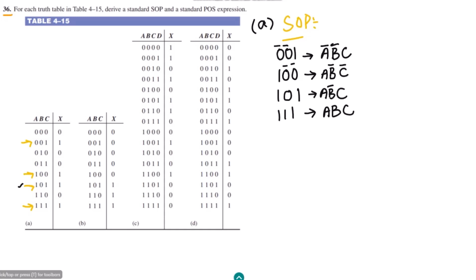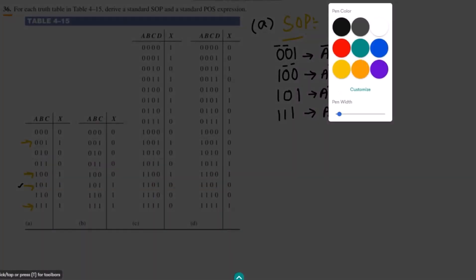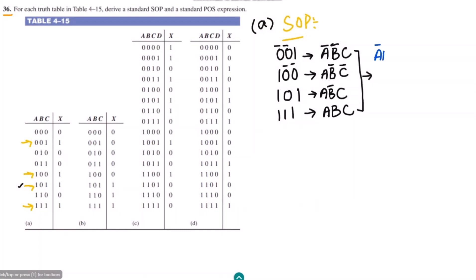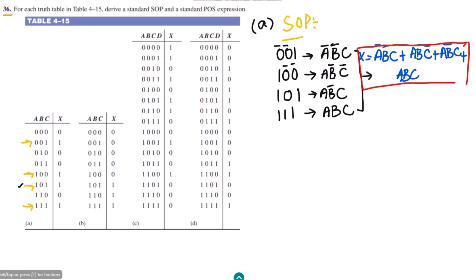In order to get the sum of product form, I will add these terms together. So what I will get, written in blue, is: A prime B prime C plus A B prime C prime plus A B prime C plus A B C. This is the sum of product form for my question.